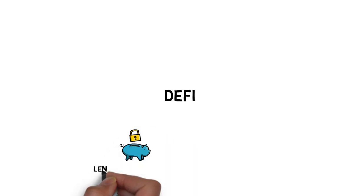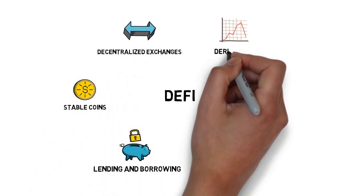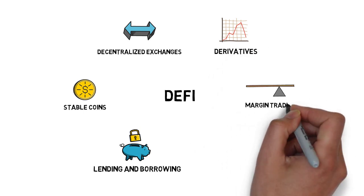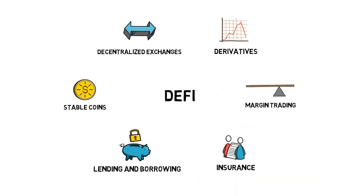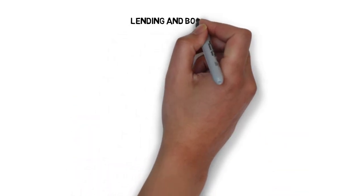Some of the other important parts are stablecoins, decentralized exchanges, derivatives, margin trading, and insurance. Let's talk about each of the categories one by one.